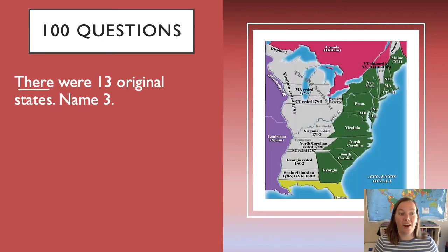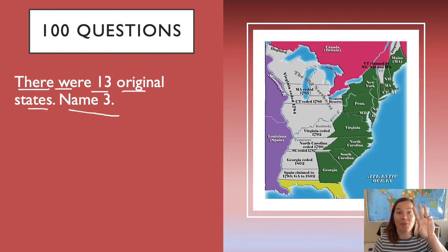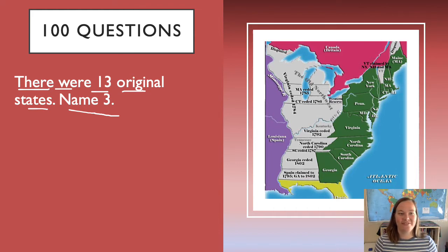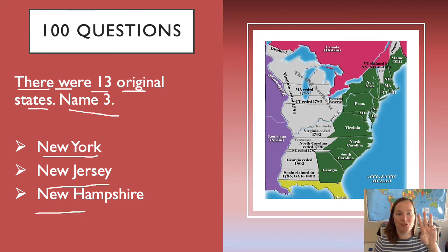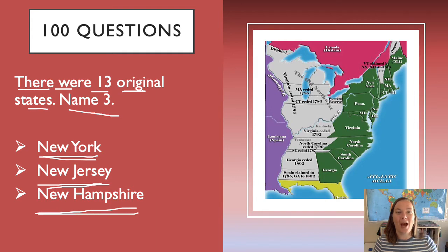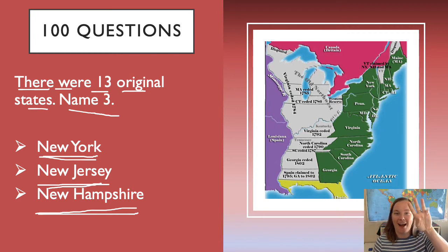There were thirteen original states. Name three. New York, New Jersey, New Hampshire. You could also say some of the other states, but these I find are the three easiest for some students to remember.